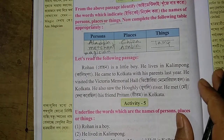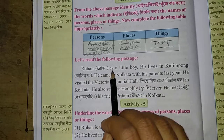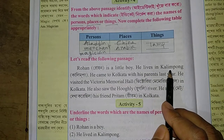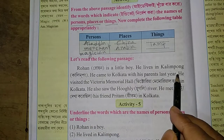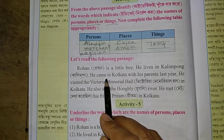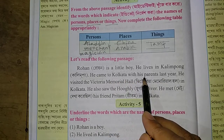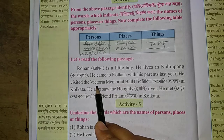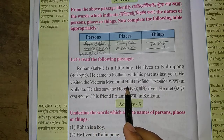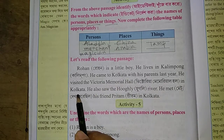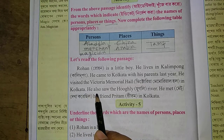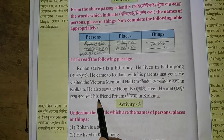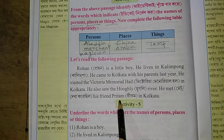Let's read the following passage. Rohan is a little boy. He lives in Kalimpong — Kalimpong is a place. He comes to Kolkata — Kolkata is a place — with his parents. Last year he visited the Victoria Memorial Hall, a memorable thing in Kolkata. He also saw the Hooghly River. He met his friend Pritam — Pritam is a person.